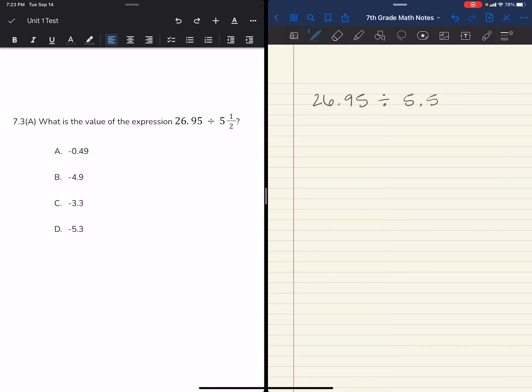Now that I'm dividing decimals, I know that the second number is always outside. The first number is always inside. My divisor needs to be a whole number, so I'm going to move that guy over one time and bring him up into the quotient so I don't forget about him.